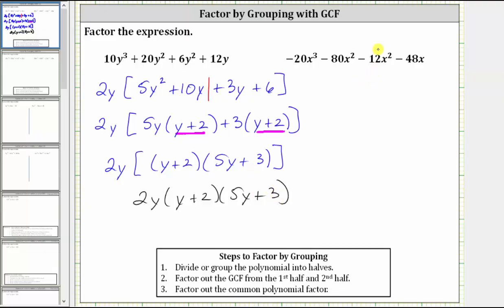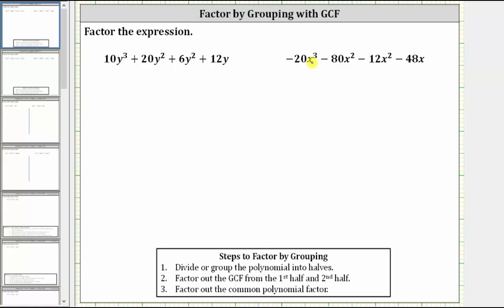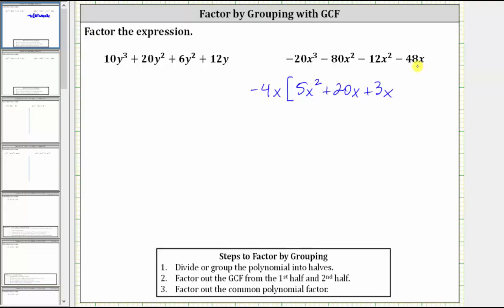Let's look at our second example. Remember, the first step is always to factor out the greatest common factor. The greatest common factor of all four terms is 4x, but because the first term is negative, let's factor out negative 4x rather than positive 4x. If we factor out negative 4x, it's going to change the sign of each term. Factoring out negative 4x from negative 20x³ gives us positive 5x², from negative 80x² gives us positive 20x, and from negative 12x² gives us positive 3x, giving us plus 12 from negative 48x.